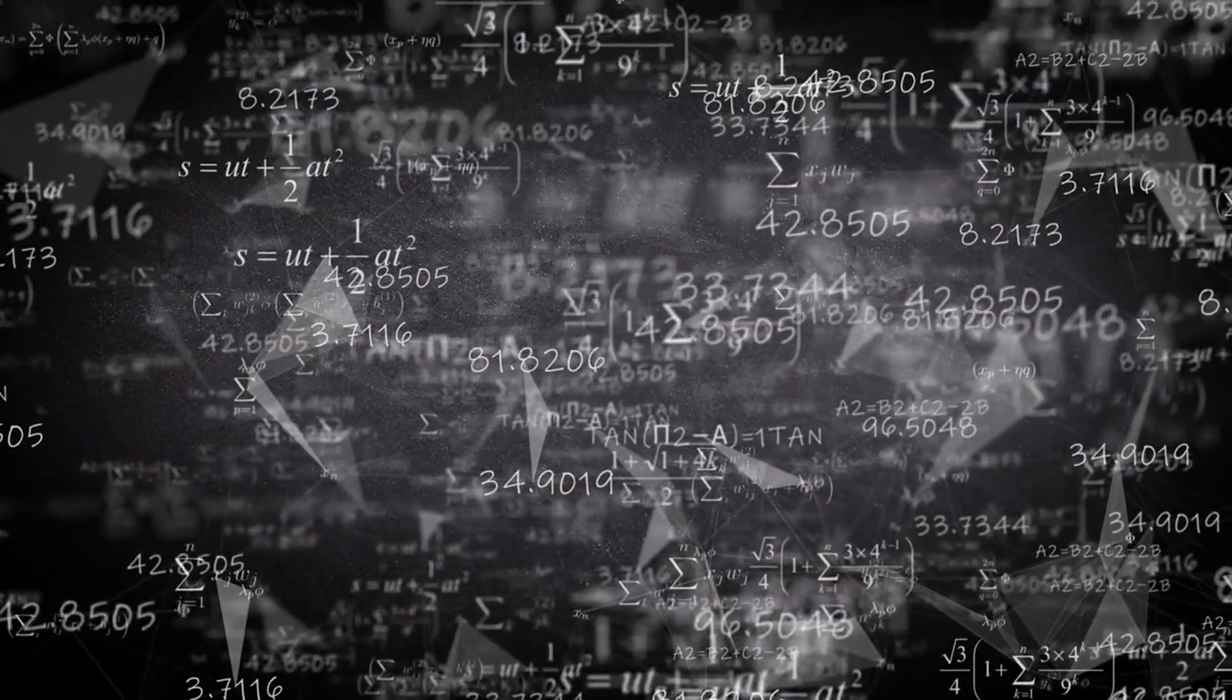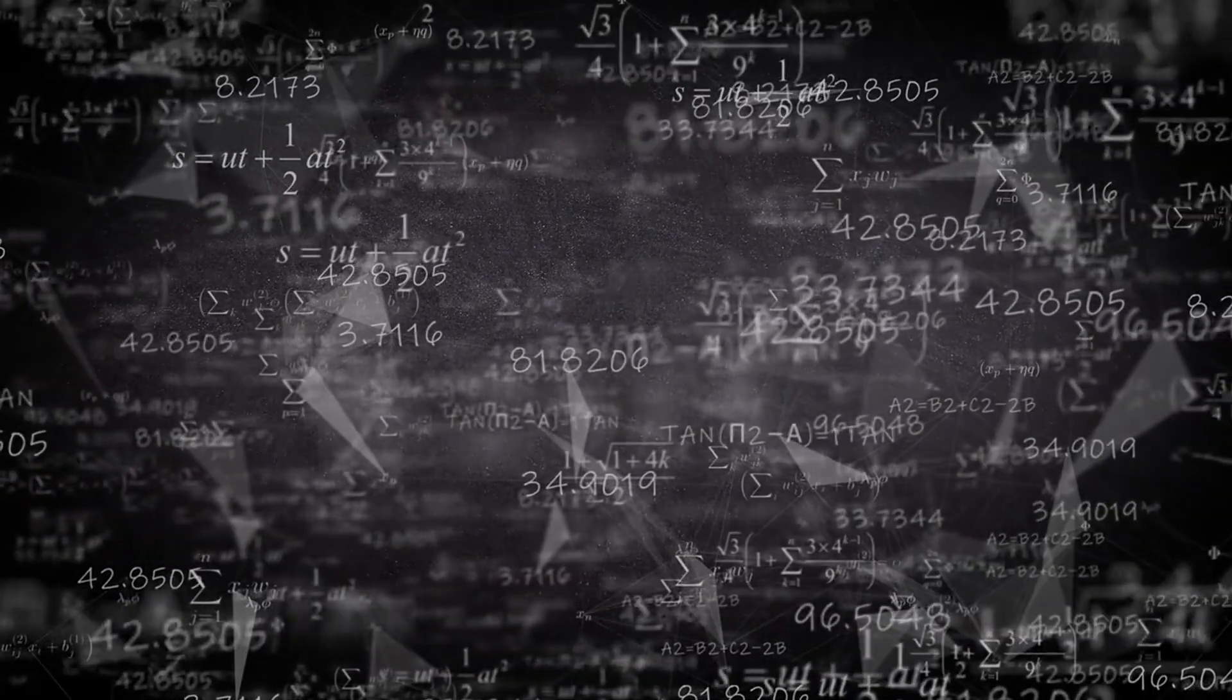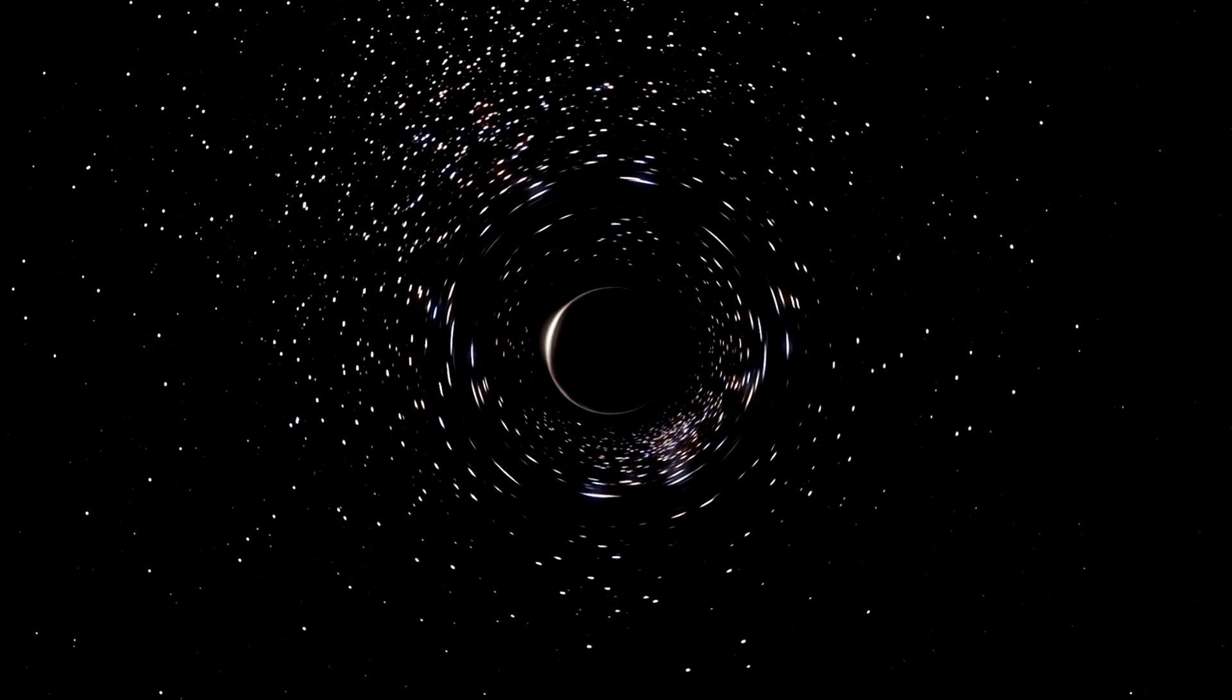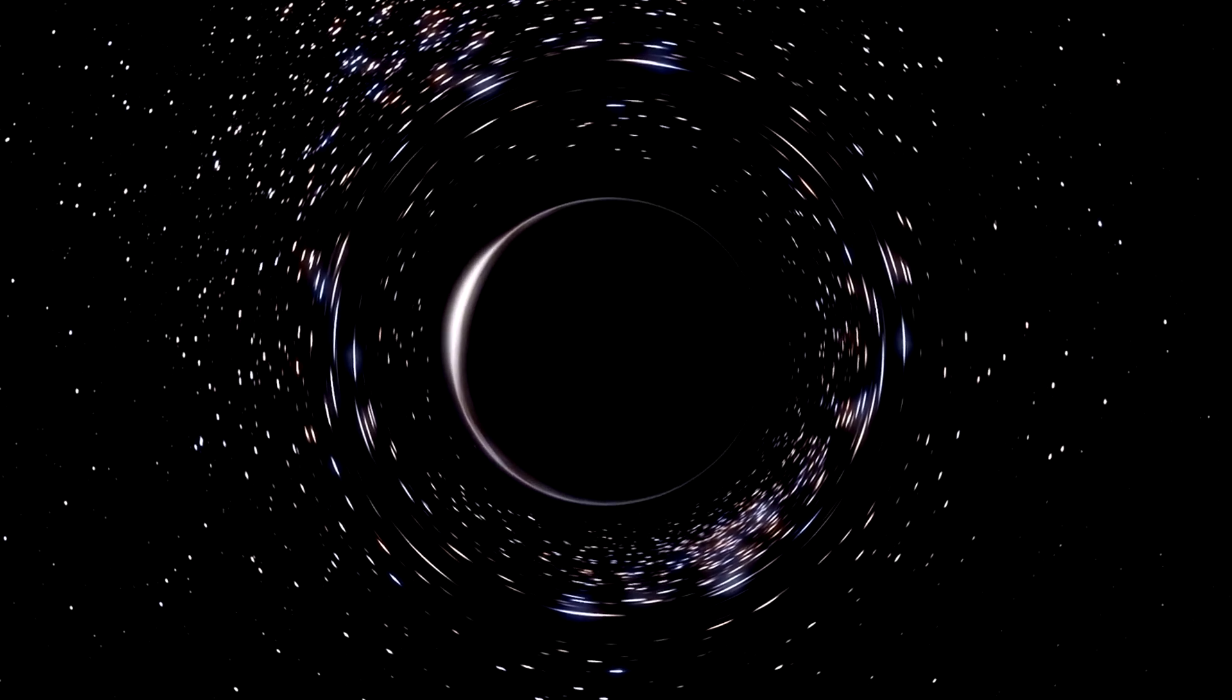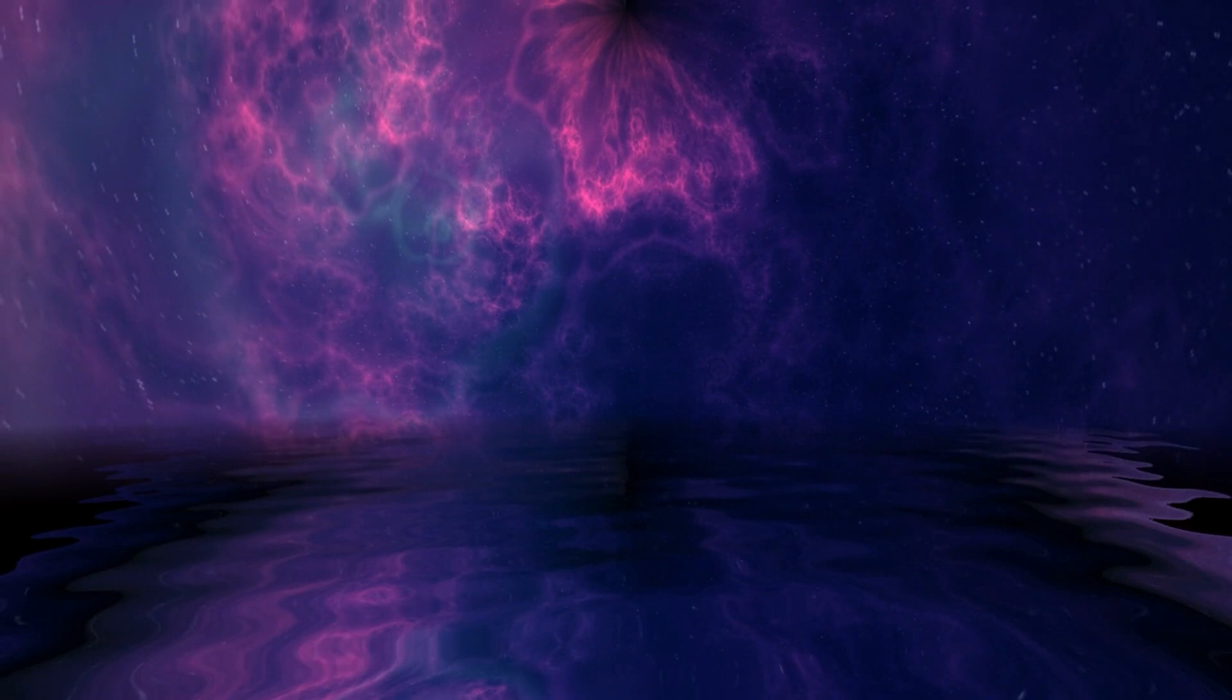There are multiple theories as to why the Boötes void exists. One theory suggests that this supervoid was formed by the merging of smaller voids over billions of years. Just as rivers flow into lakes and oceans, creating larger bodies of water, it's thought that cosmic voids merge, creating an even larger patch of empty space.